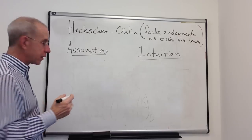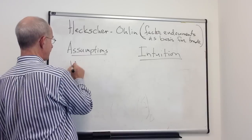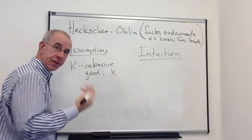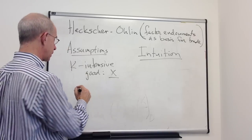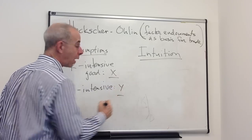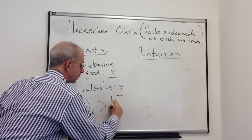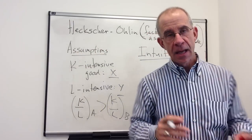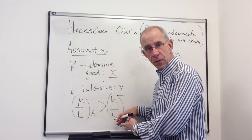We are also assuming that there are different factor intensities in the two goods. We're going to assume that good X is the capital-intensive good — please take a look at that in the relevant video — and good Y is the labor-intensive good. The capital-to-labor endowment for country A exceeds the capital-to-labor endowment for country B, so they have these two different types of goods and two different factor supplies.